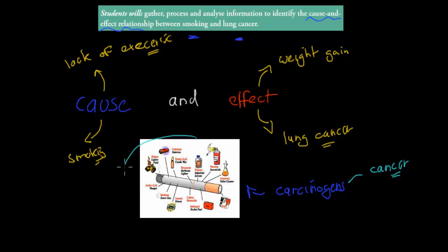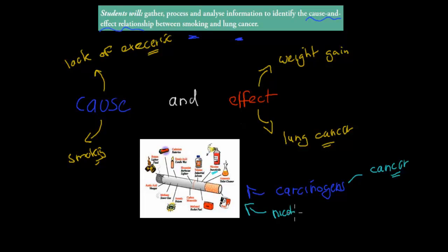Inside our cigarettes, we can find lots of different types of chemicals. For example, we can find tar, nicotine, and other things. Nicotine is one of the chemicals inside our cigarette that is a carcinogen. To say that cigarettes themselves cause cancer is true, but to be more specific, it's the specific types of chemicals inside the cigarettes that cause cancer.